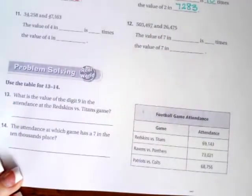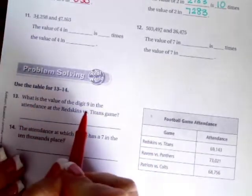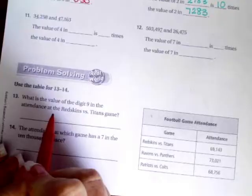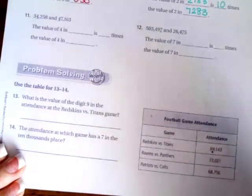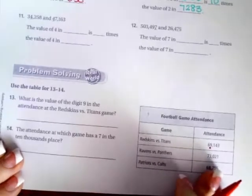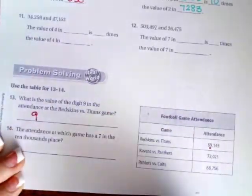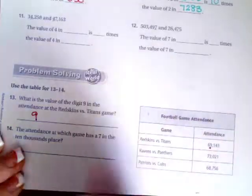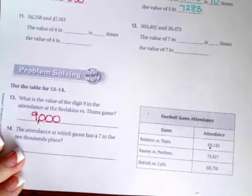We're going to go down to number 13. Number 13 says, what is the value of the digit nine in the attendance at the Redskins versus Titans game? Well, that's that number right there. So we're going to drop that number down. So we just have a nine. And then one, two, three numbers after it, turn into zeros, 9,000.